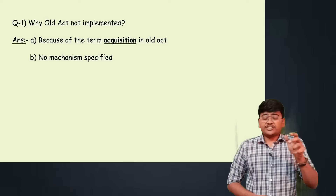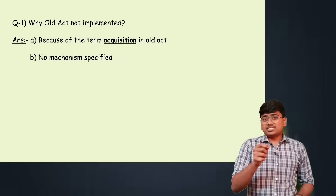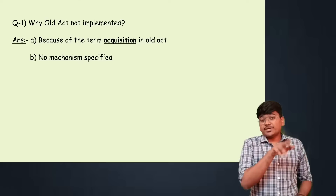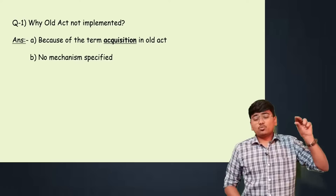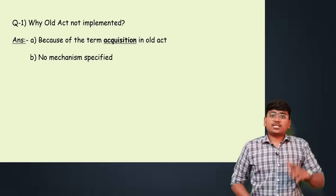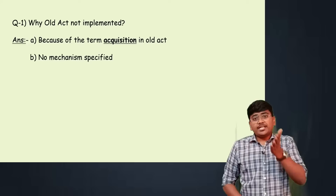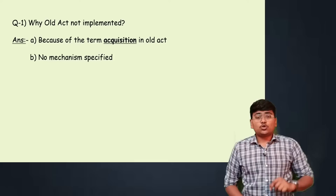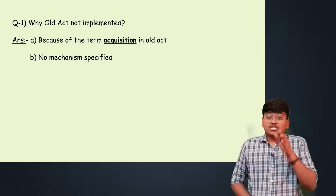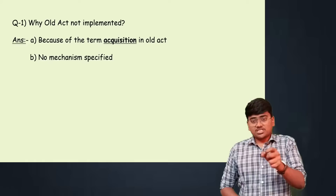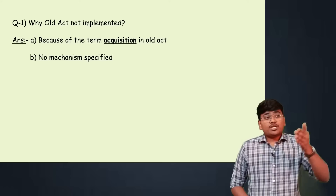After seeing the history, another question arises: since the new act was implemented as an amendment and eight of the nine sections were removed with only one section retained, why didn't they simply strike off the old act completely and implement a new act in 2016? This question was actually asked in parliament to Finance Minister late Arun Jaitley by the opposition parties — why was an amendment made to the old act rather than a new act?